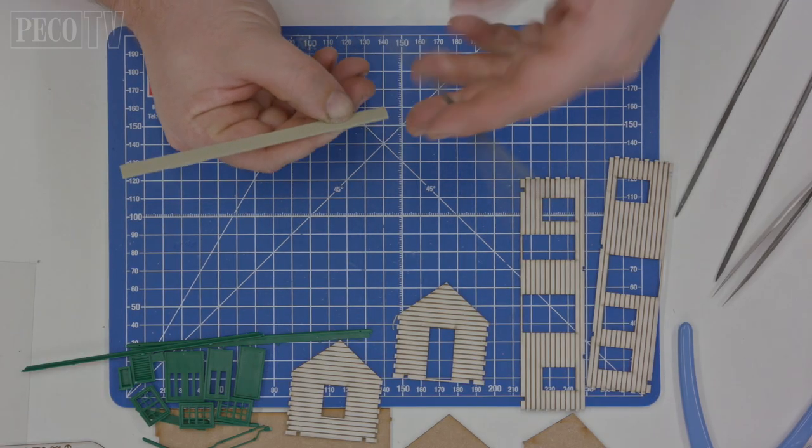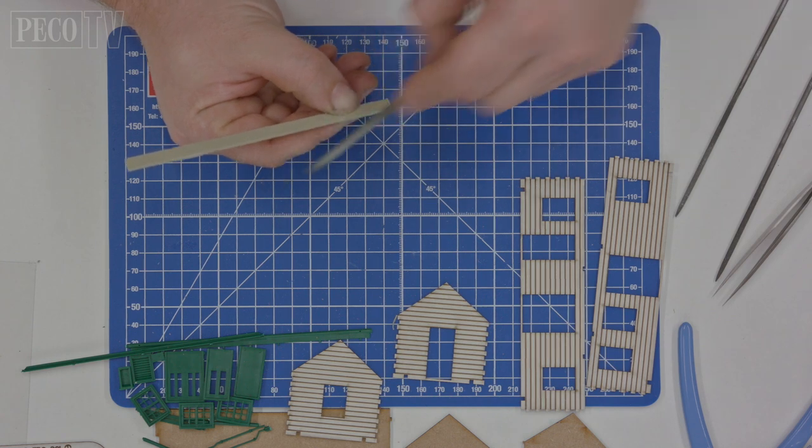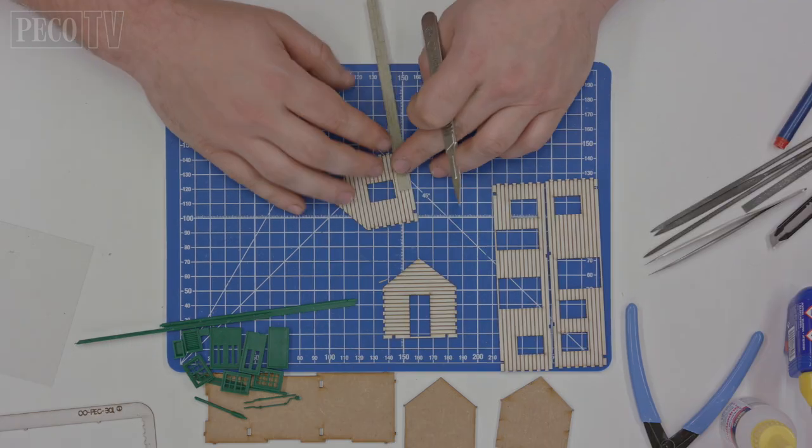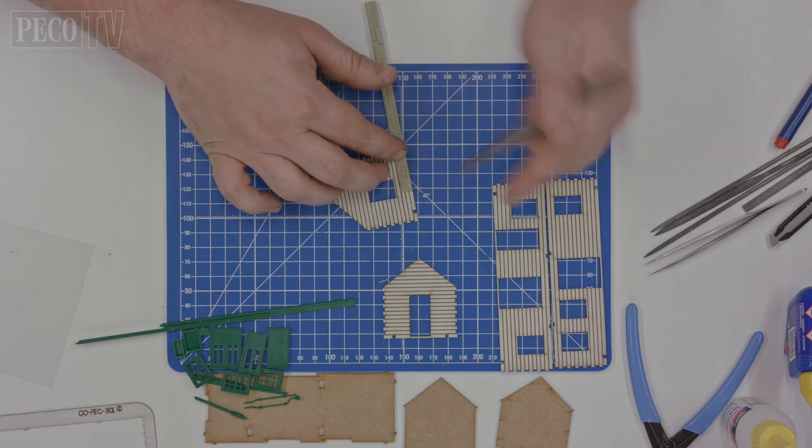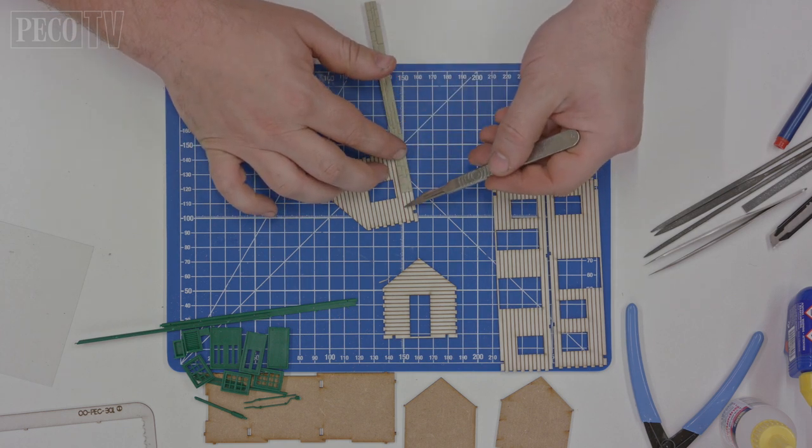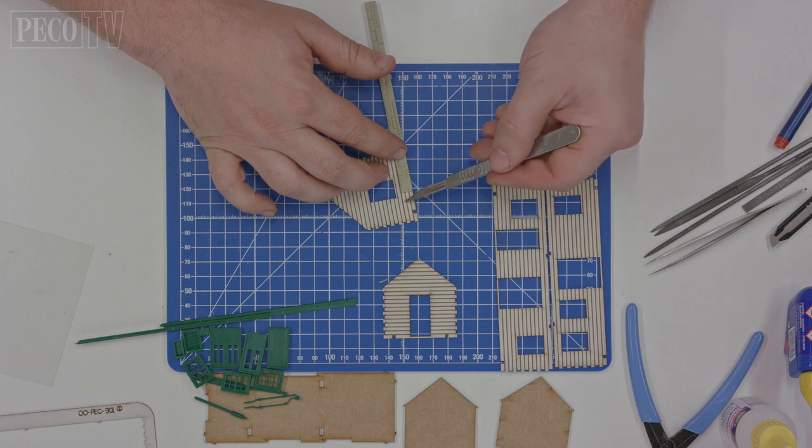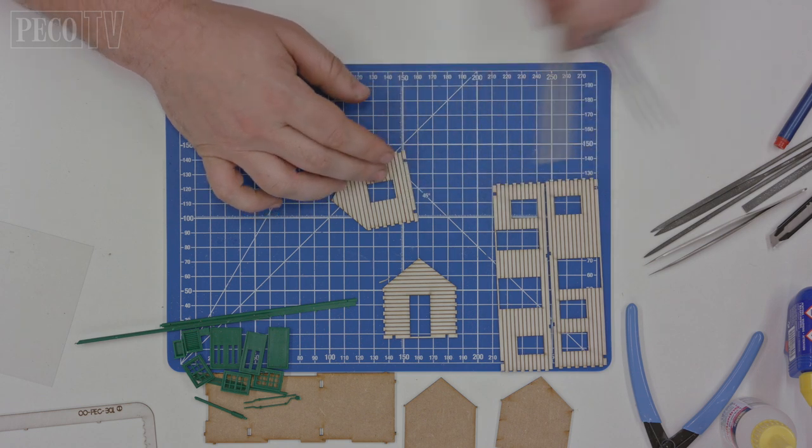Then after cutting tidy up any rough edges with a file. Then you want to remove 8mm from the bottom of each of the four walls of the station building which coincides with the third wooden slat recess as shown here.